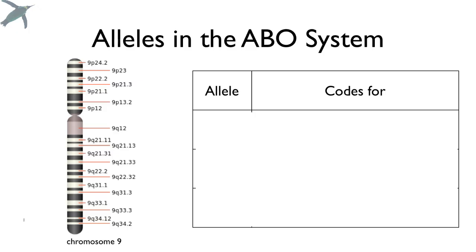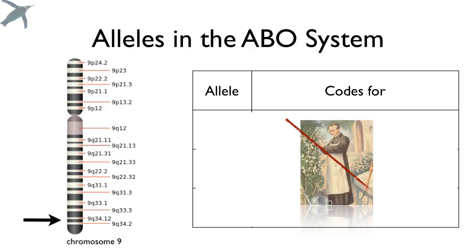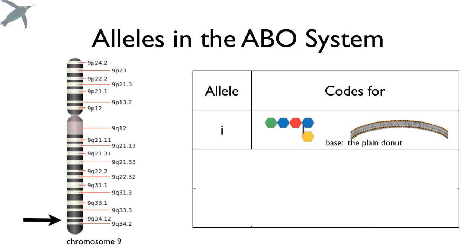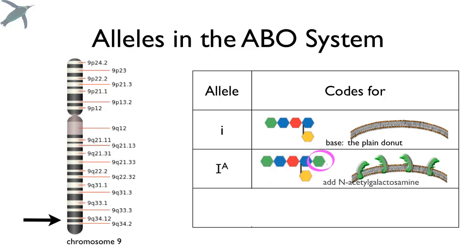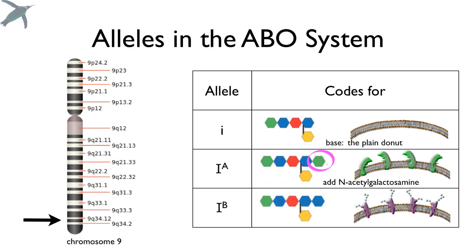The alleles in the ABO system are encoded at the long arm on chromosome 9. This is not an example of Mendelian inheritance, so it might be a little confusing. There are actually three alleles. We're going to use a lowercase i to code for the base — that plain donut. We're going to use a capital I with a superscript A for the A antigen, so that's the plain donut with N-acetylgalactosamine added. And the third allele is the B antigen — the base unit with galactose added. Those are the three alleles we have.